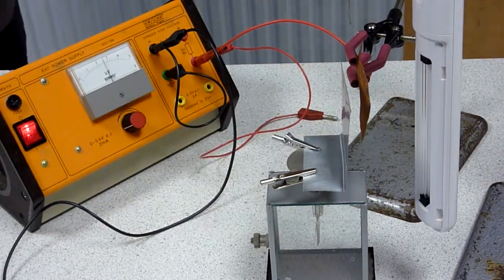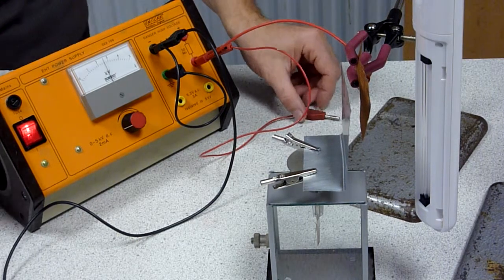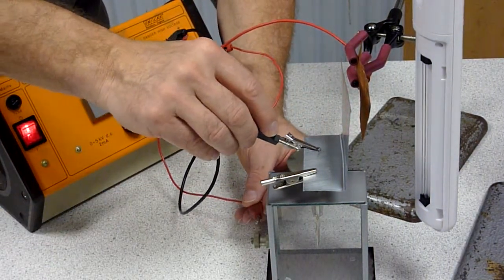Discharge the electroscope. Right. Okay. So it's now fully discharged but I've got 4000 volts. Just going to use this to charge the electroscope.